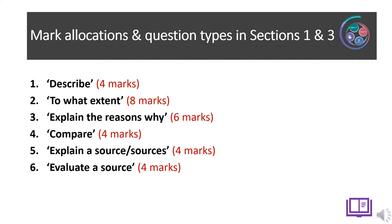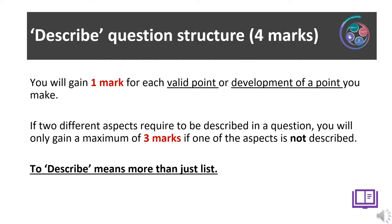There are six question types in sections 1 and 3 of your National 5 Classical Studies paper: a describe question for 4 marks, a to what extent question worth 8, an explain the reasons why question worth 6, a compare worth 4 marks, explain what a source is saying for 4 marks, or an evaluate the source question also worth 4 marks. Let's get started looking at our different question types and associated skills.